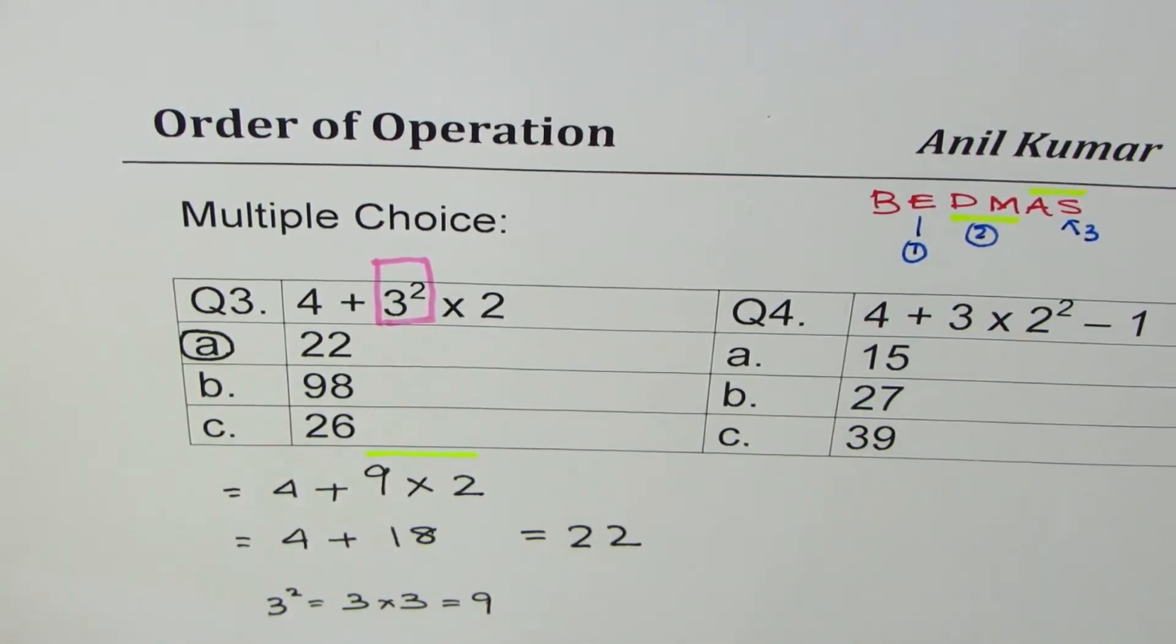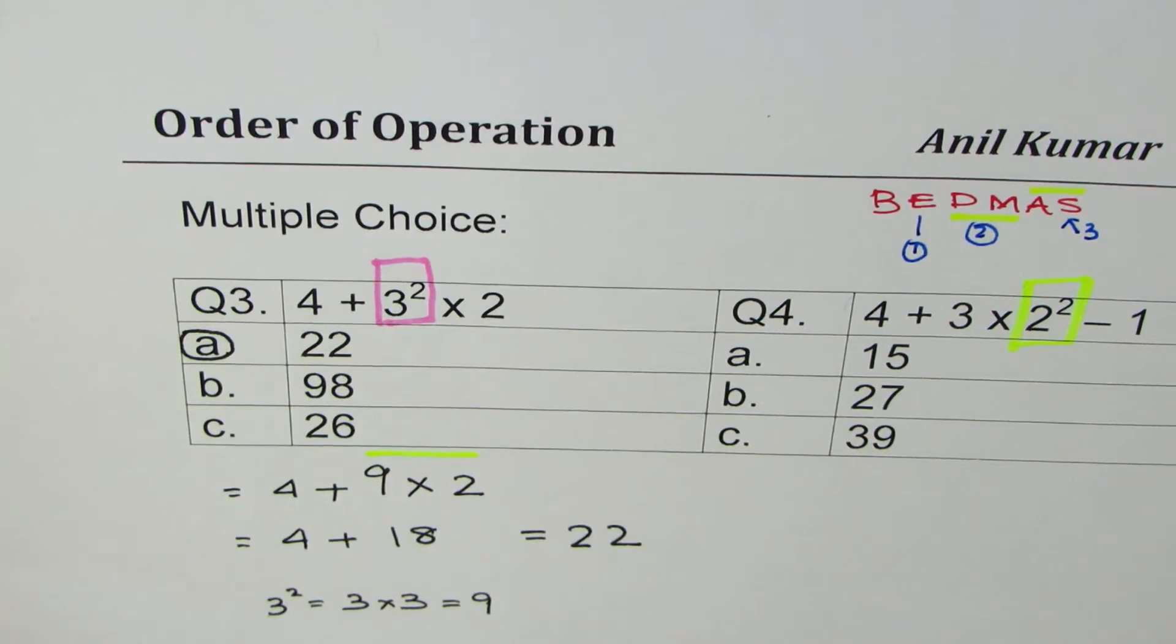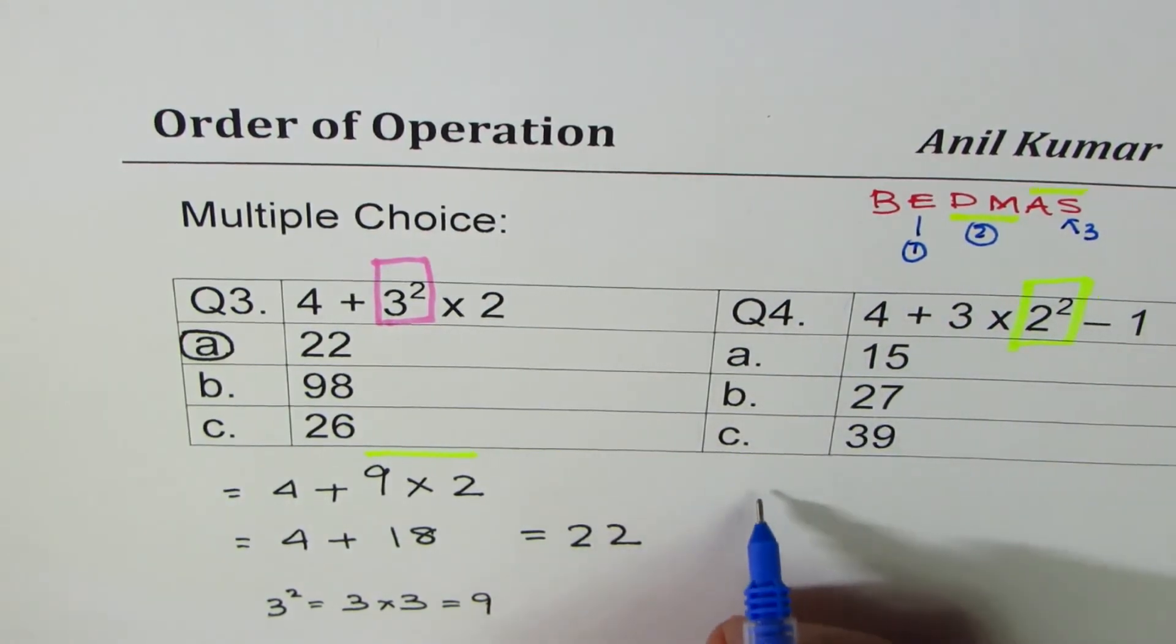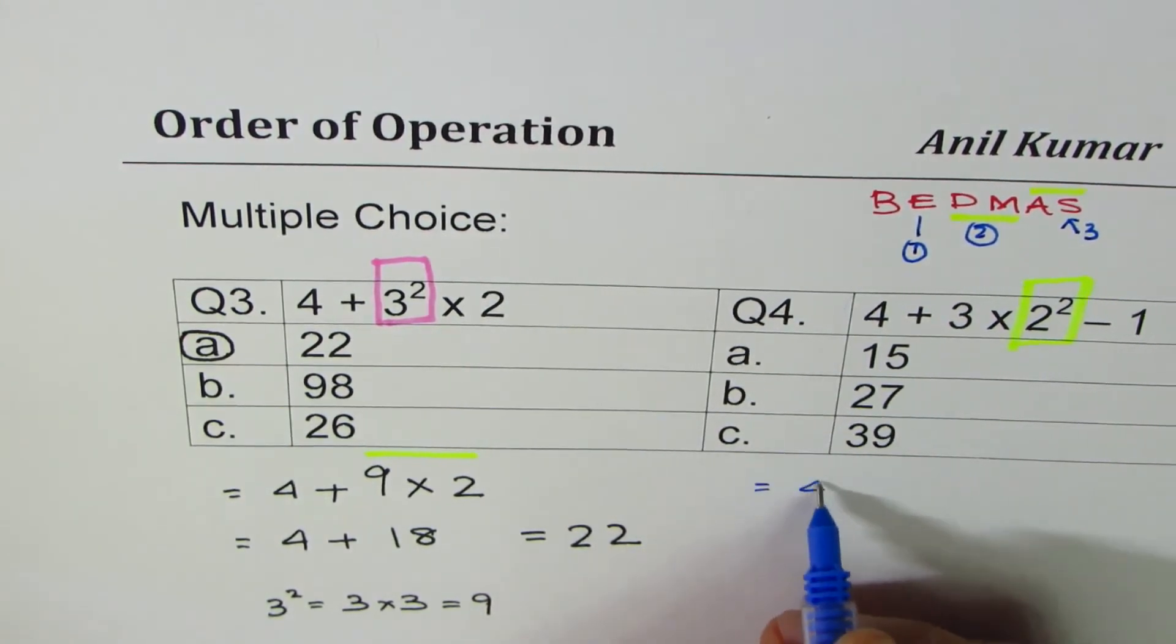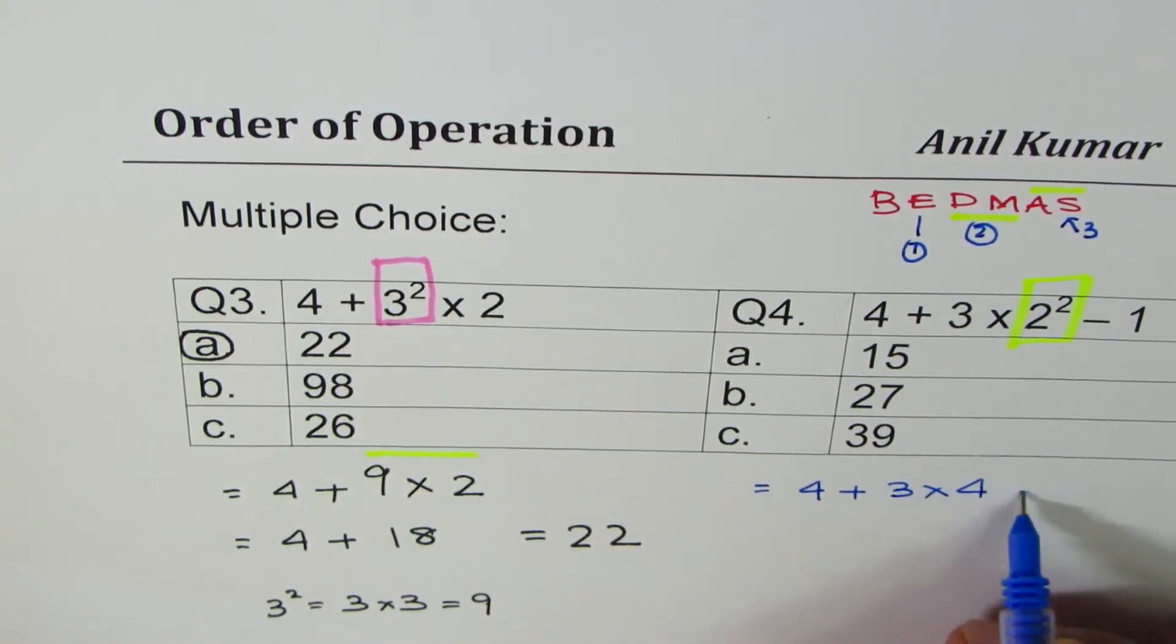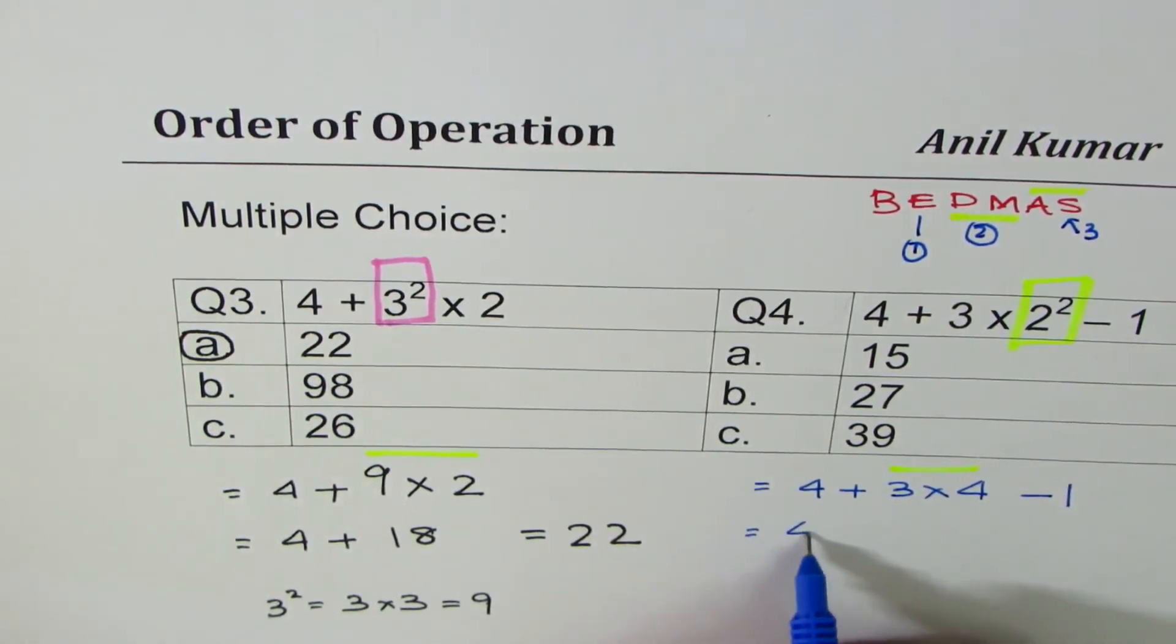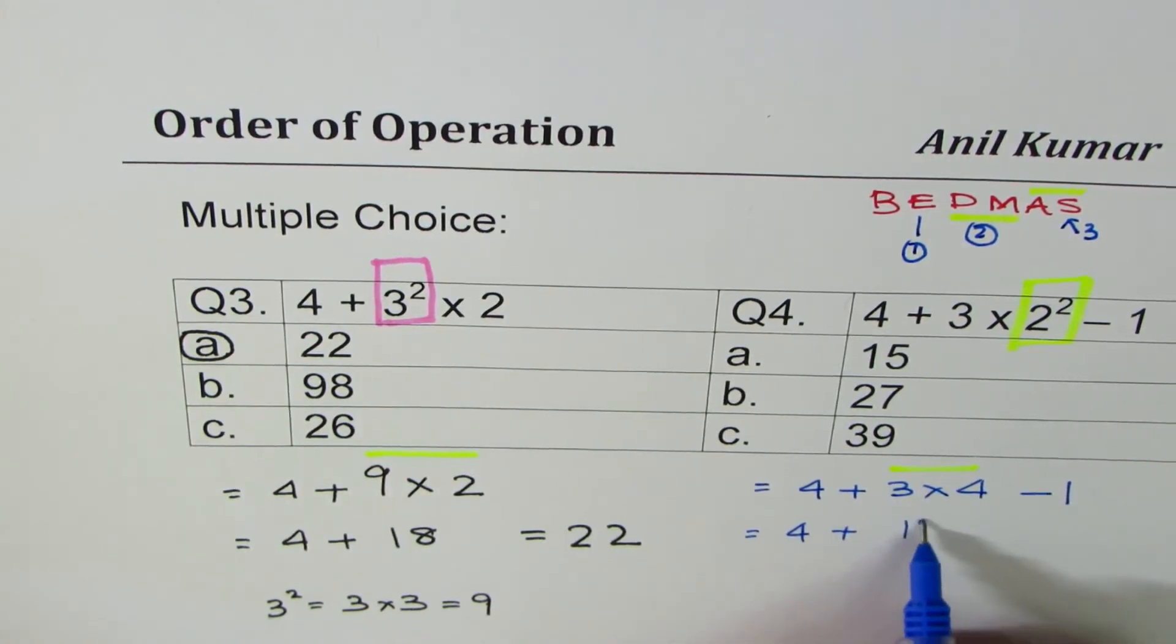Now I think you can do the next one, question number 4. First thing you have to do is square of 2, which is 2 times 2. Let me write down the solution for you: it is 4 plus 3 times 2 times 2 is 4 minus 1. Now we have to perform multiplication, so we could write 4 plus 3 times 4 is 12.